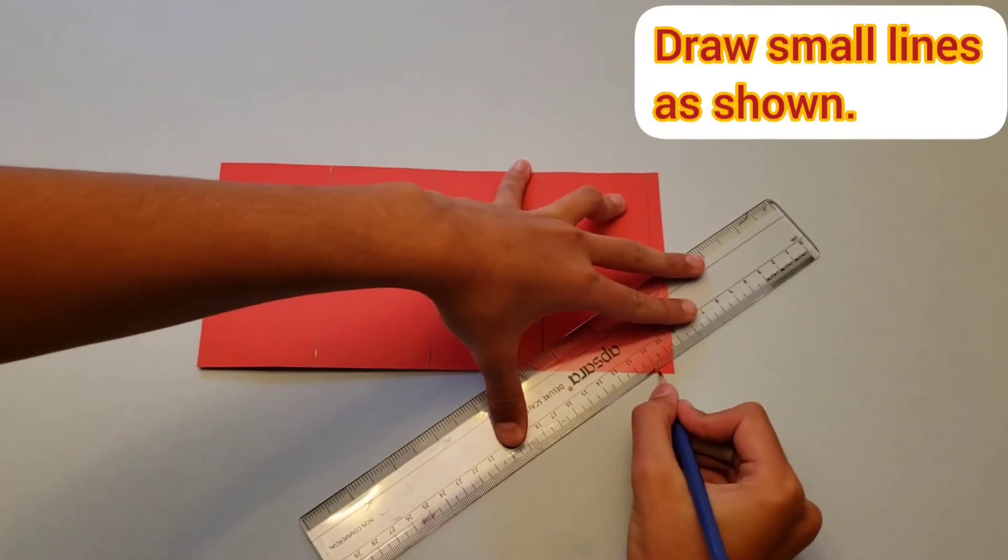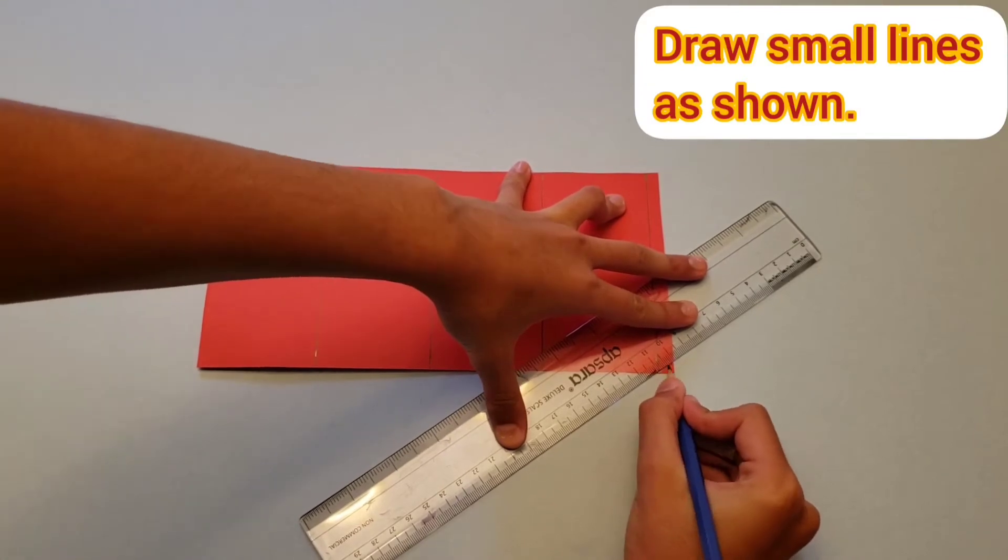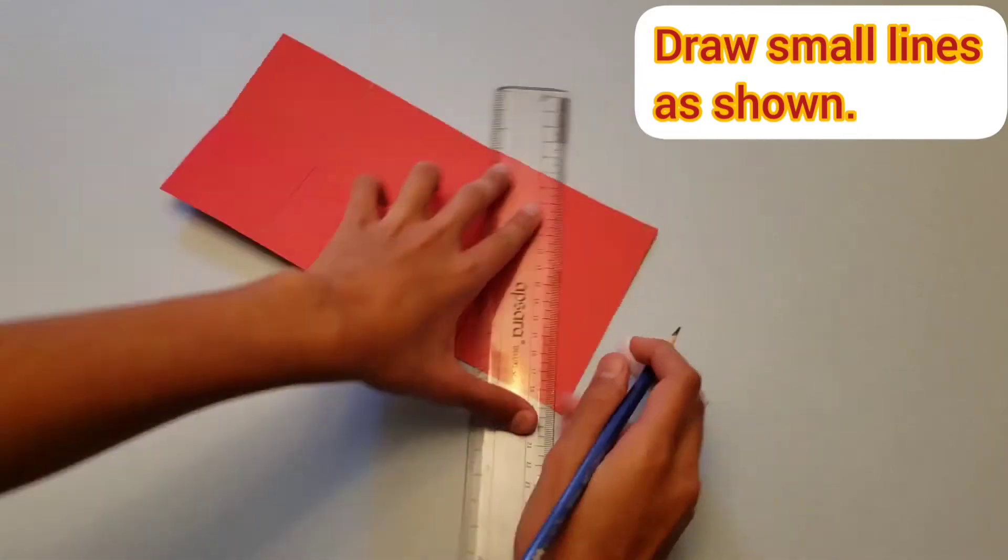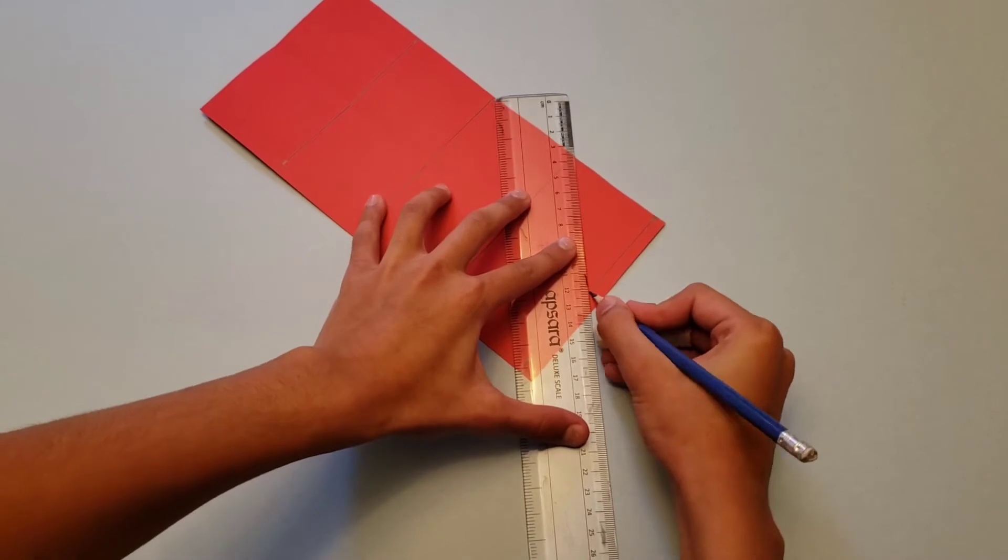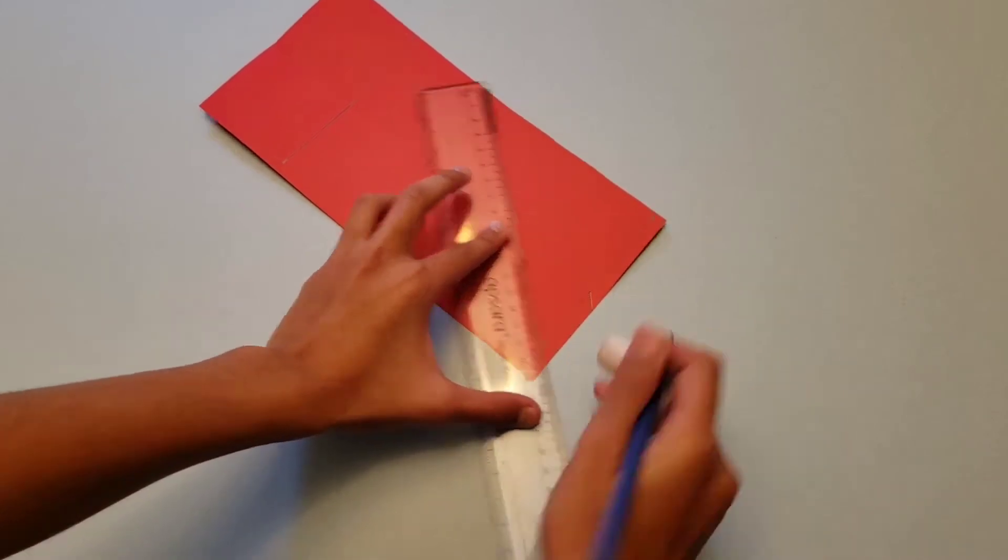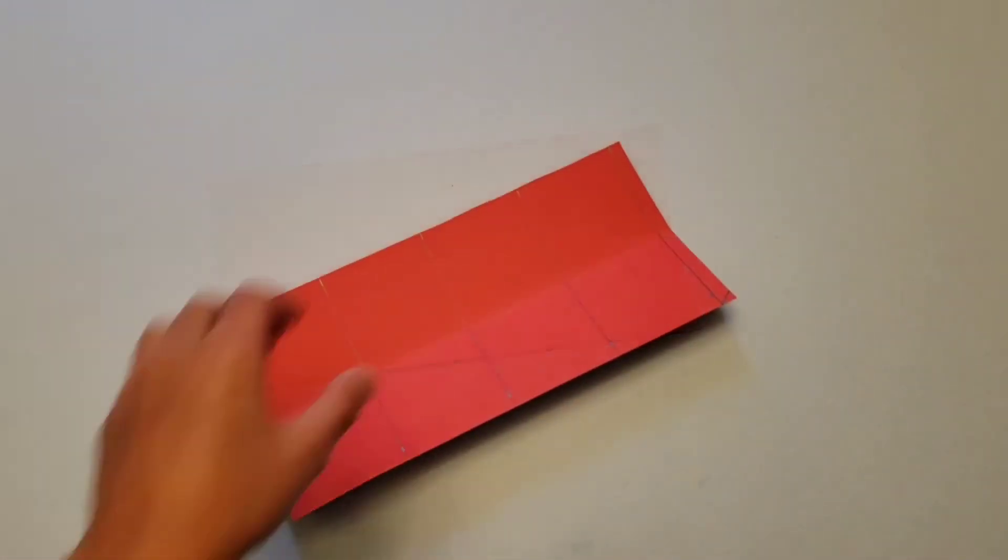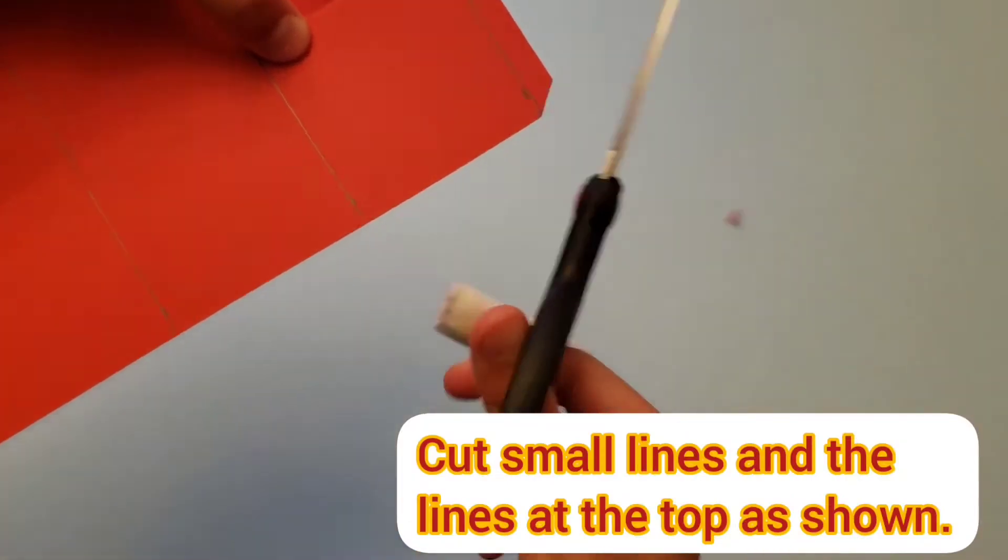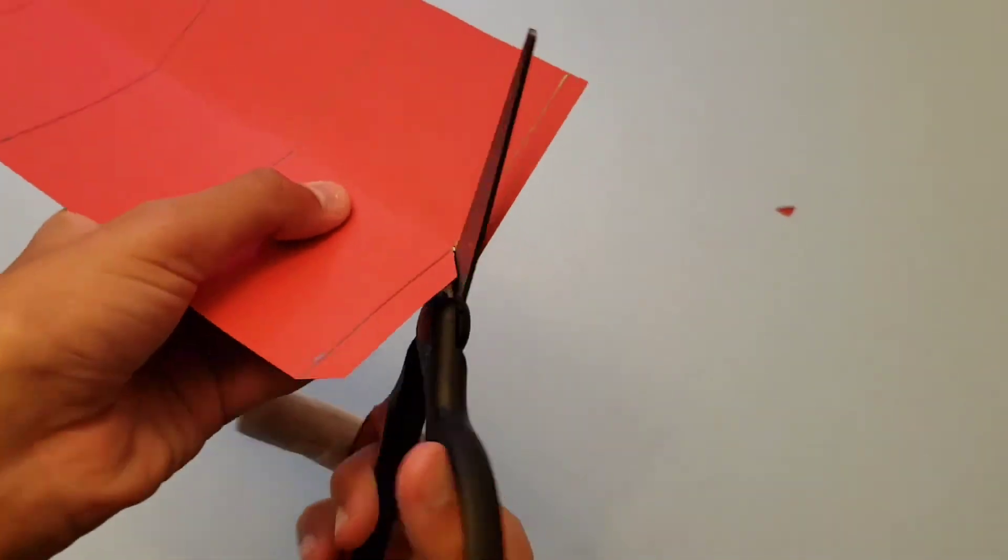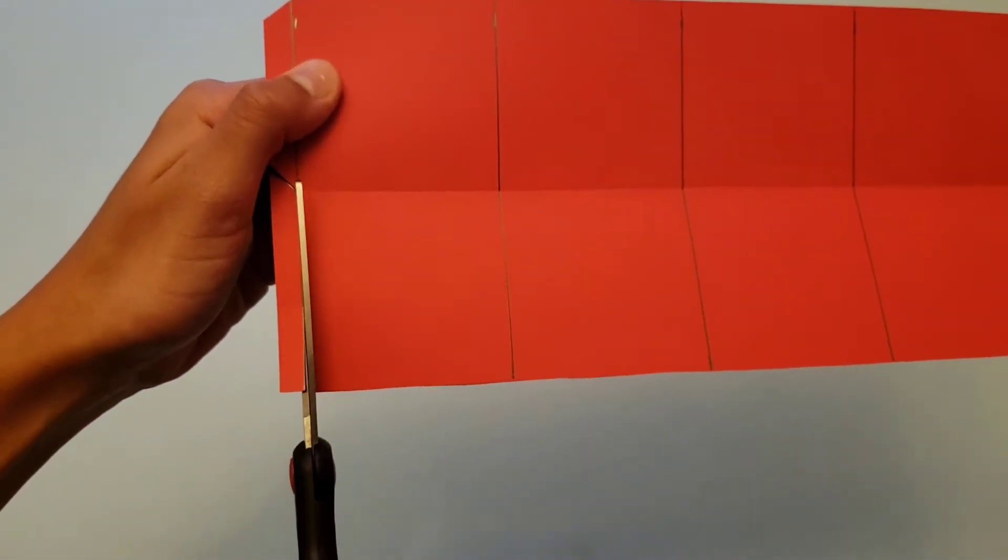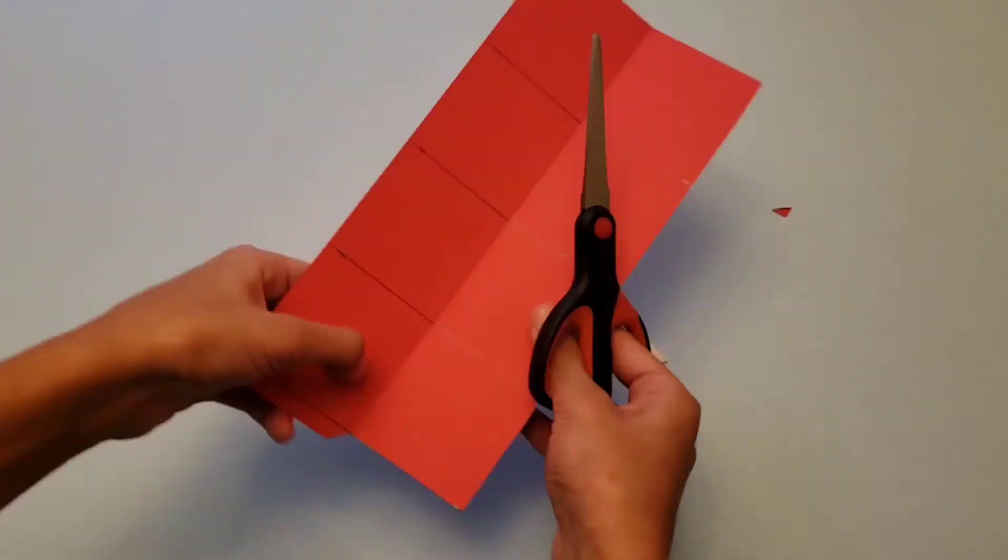Make a small diagonal line at the bottom right corner of the piece of paper, and one going the other way, as shown, in the middle. Now you're going to cut the two diagonal lines, and cut all of the lines on the top side of the paper.